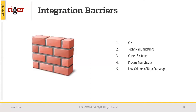The next barrier is technical limitation. Sometimes there are technical limitations — we couldn't send or they couldn't receive the data the client wants to transfer from RIGOR to another system. Some systems are closed systems; RIGOR is an open system ready to integrate with anything. However, some older systems may not even have an integration module, making the process very complex.